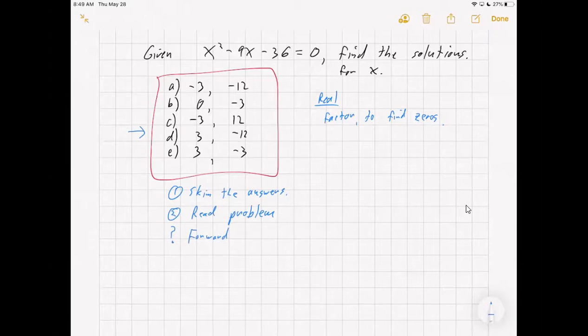So you work the problem forward, and then you pick which letter matches up with your answer, hopefully. Now, one thing to be aware of is the incorrect answers often are found, they don't just put random numbers in. They determine one or two mistakes that you might make in doing the problem, and then they put in answers that would correspond to those mistakes.